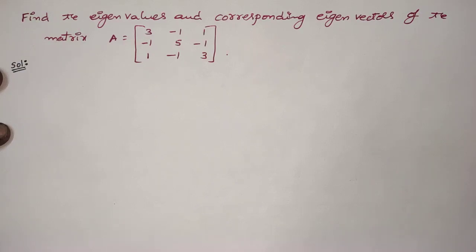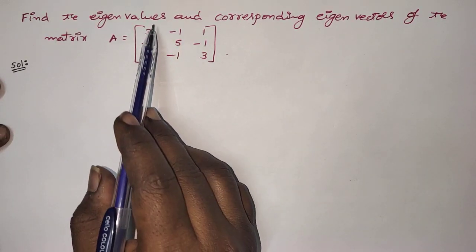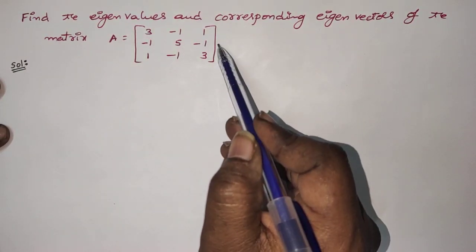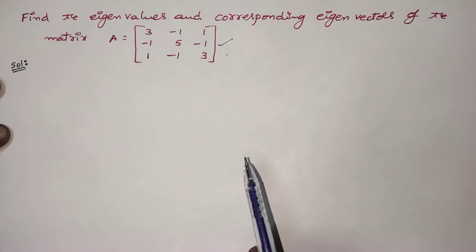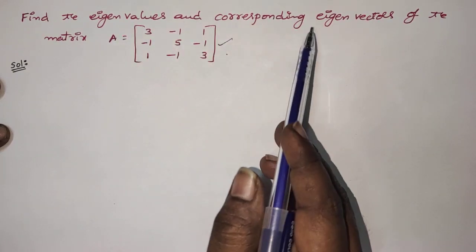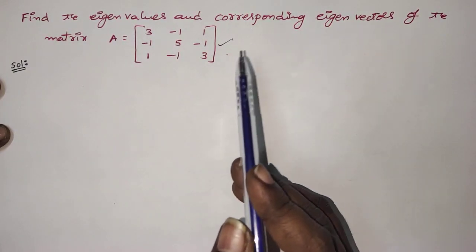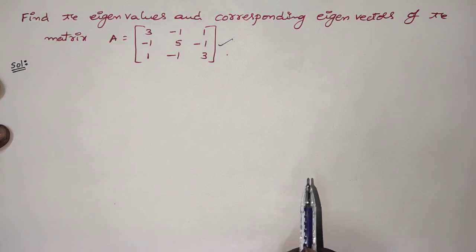Hi everyone, welcome back to our channel. In this video, I will explain another example on finding eigenvalues and eigenvectors. This is the given matrix. We are going to find out the eigenvalues and corresponding eigenvectors of this matrix C.